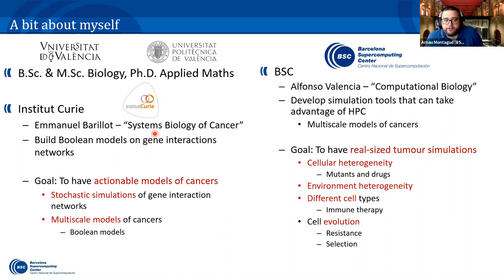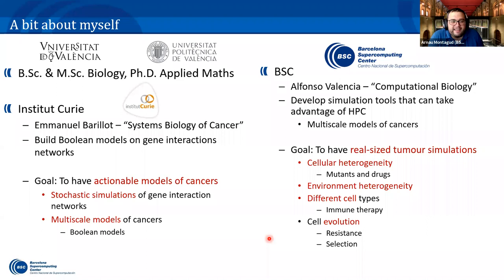I then moved to Paris for a postdoc under Emmanuel Barillot, whose group was called Systems Biology of Cancer. The main focus was to build Boolean models of gene interactions. During this postdoc, Gael discovered the preprint of PhysiCell 1.0 and we decided to give it a try. We ended up working with multi-scale models of cancer, starting from stochastic simulations of Boolean networks of gene interaction networks.